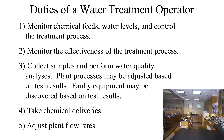The operator has two main sources of information to monitor the processes at the plant. Online, or continuous monitors, are instruments positioned throughout the plant. They constantly test the water and send information to the computer system controlling most plants. The operator monitors flows and water quality data on the plant computer and must react quickly when they notice a problem.